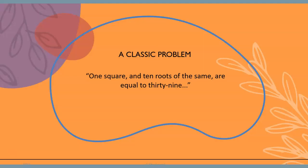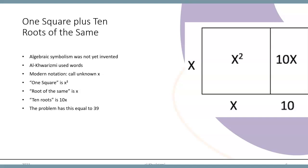One classic problem introduced in the book stated that one square and ten roots of the same are equal to 39. The problem wants to find the size of the square. Algebraic symbolism was not yet invented, so finding a solution required a written or verbal explanation.